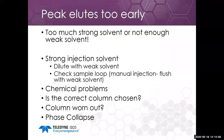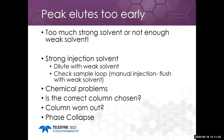Also check your sample loop if you're doing a manual injection. Whatever the previous run finished at will remain in the loop. If the last run had a wash step with 100% B solvent — considered the strong solvent — the loop will be filled with strong solvent. Even if you dissolve your sample in water and inject it, the loop is still filled with strong solvent and that could cause your compound to elute very early.